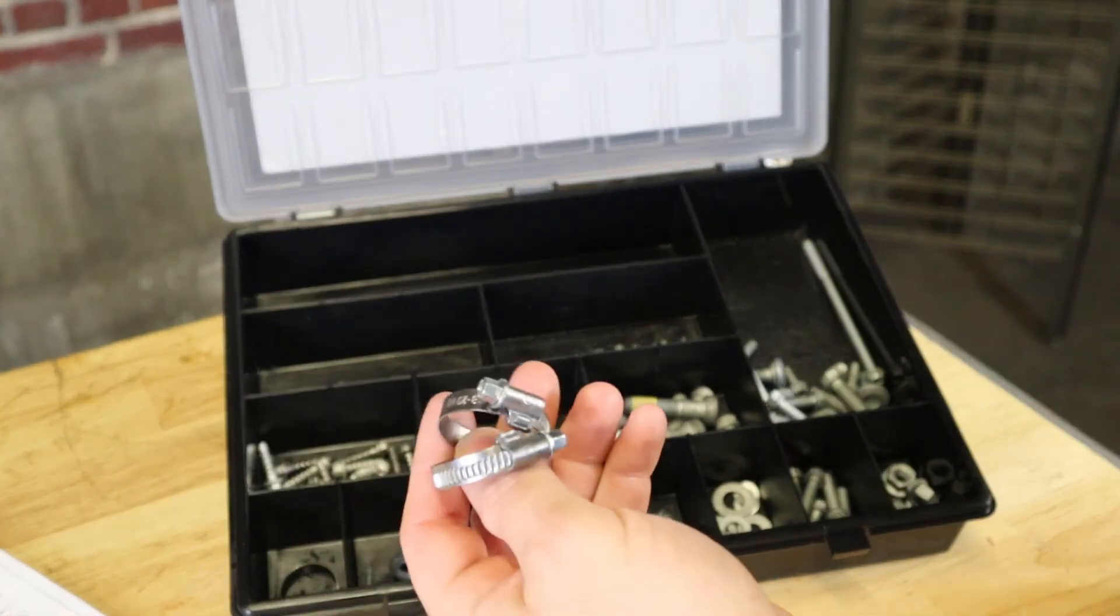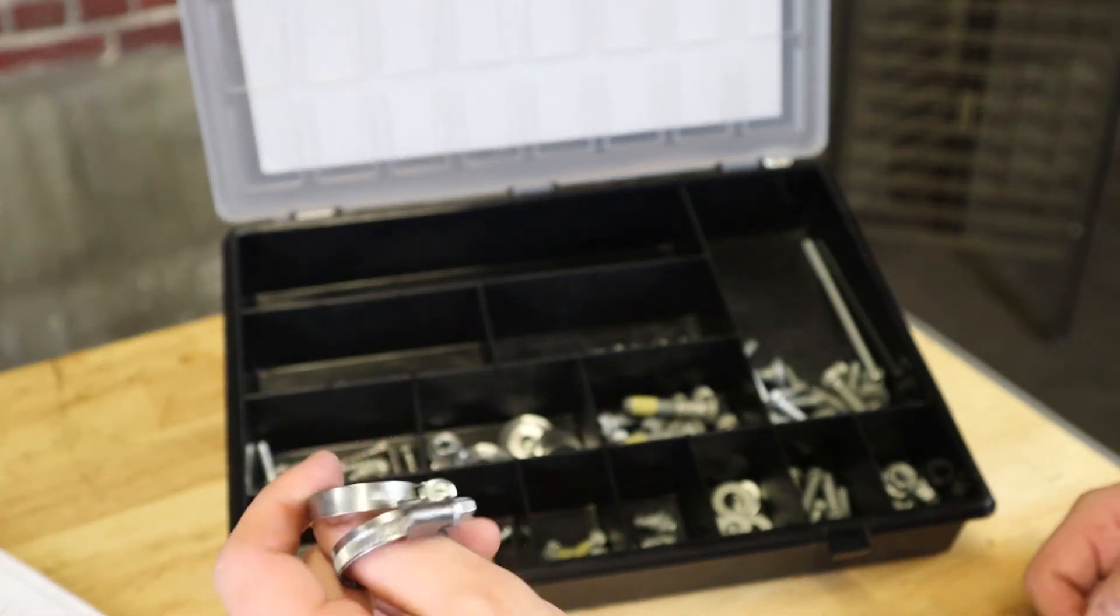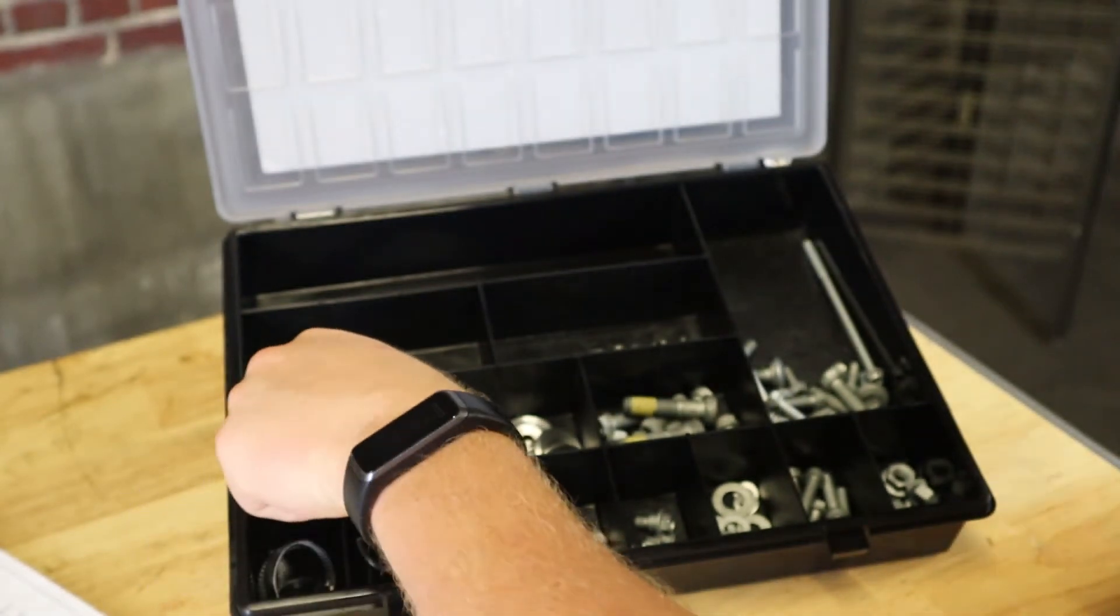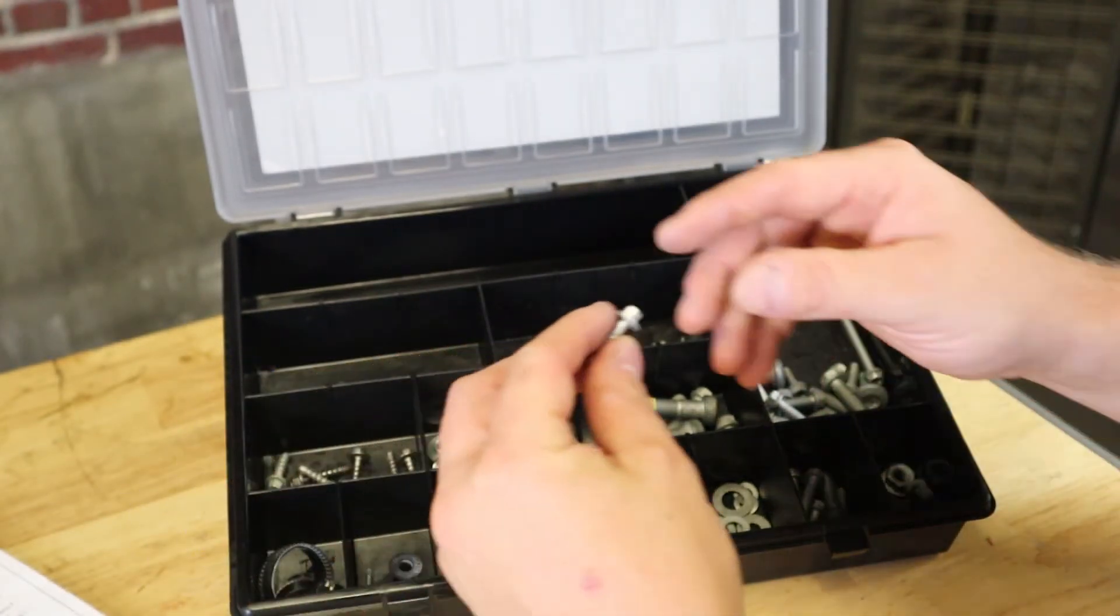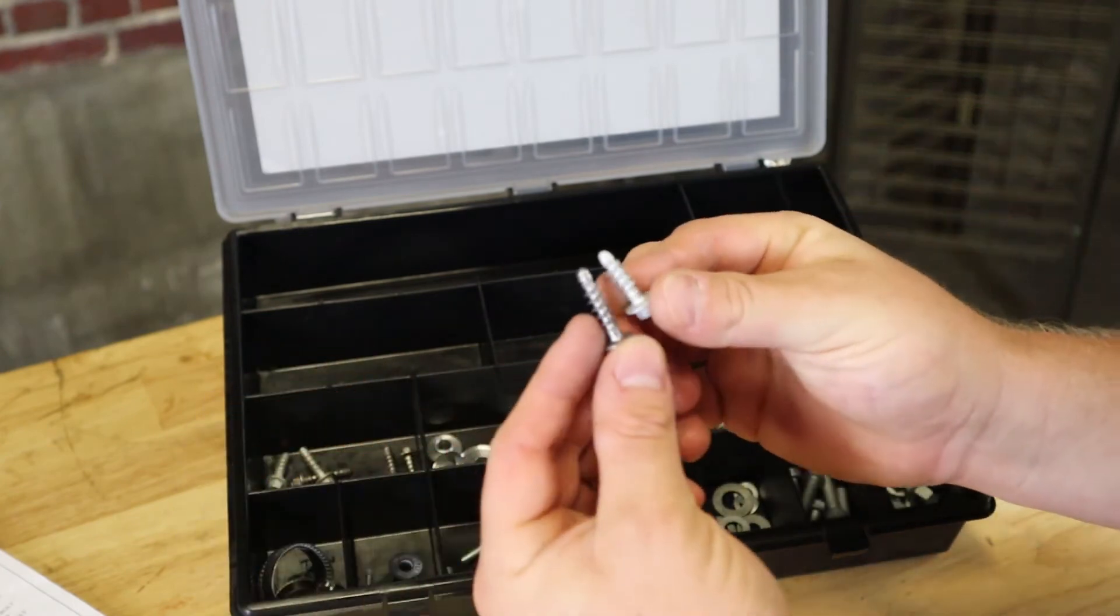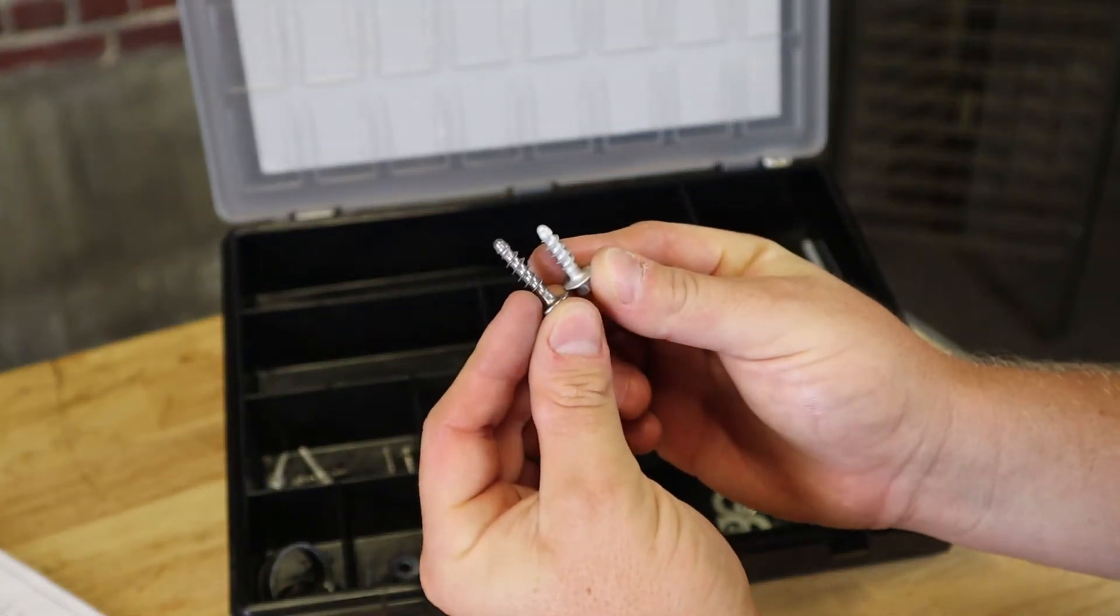Over here, you get some pipe clamps. And then here you get into your body, your plastic screws. So you've got two different size plastic screws.